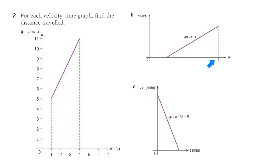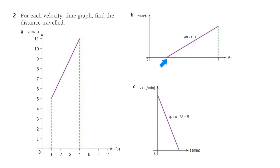Part B is like the example — we know the base starts at 4. Using the equation of the line, set velocity to 0: 0 = t − 1, so t = 1, giving coordinate (1, 0). The base of the triangle is 4 minus 1 = 3. At t = 4, the velocity is 4 minus 1 = 3, so the height is 3. Area = 3 times 3 divided by 2. For part C, use the equation to find both axis intercept points, as shown in the example, then apply the triangle area formula.